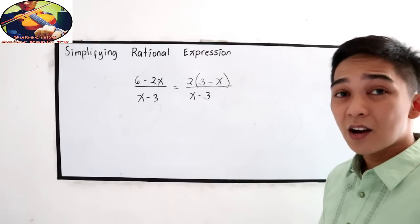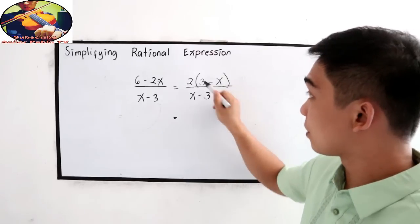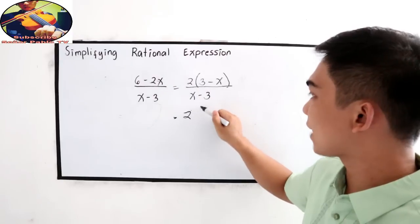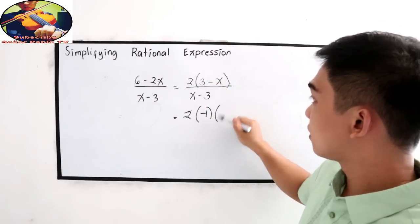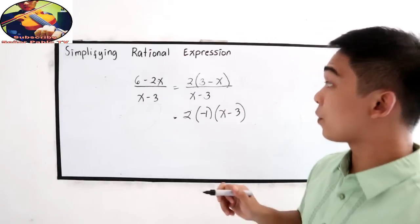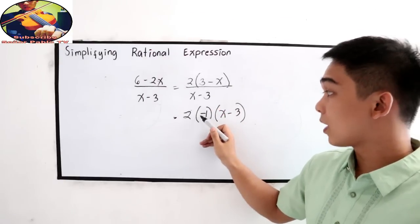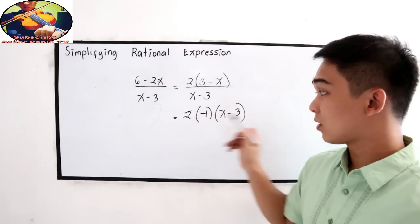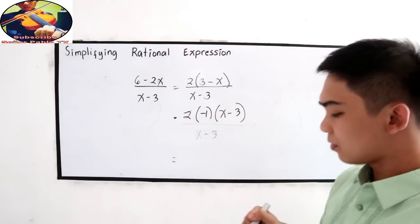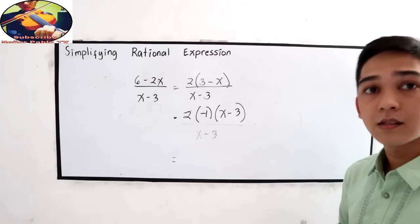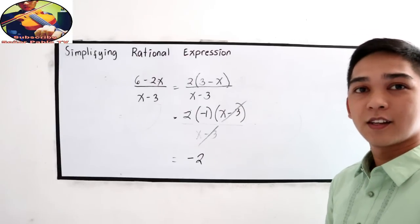Next, x minus 3. Do we have expression that we can cancel out? 3 minus x over x minus 3, aren't they the same? If we're going to multiply negative 1 outside our numerator, 3 minus x will become x minus 3 now. We're just going to change the sign. Negative 1 times x will give us negative x. Negative 1 times negative 3, that is positive 3. All over our denominator x minus 3. Now, can we cancel x minus 3? Yes. 2 times negative 1, so the simplest form is negative 2.